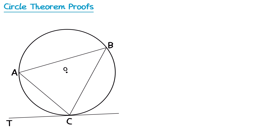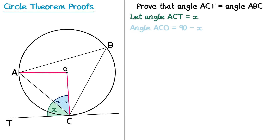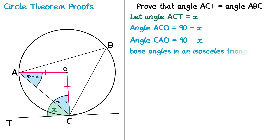For the next theorem we look at the alternate segment theorem. This could be worded as, prove that angle ACT equals angle ABC. We add radii from O to A and O to C, then mark angle ACT as X. Angle OCT is where a radius meets a tangent, which is 90 degrees. So the blue angle ACO equals 90 minus X. Since OA and OC are both radii, triangle AOC is isosceles, meaning angle CAO is also 90 minus X; the reason is base angles in an isosceles triangle are equal.